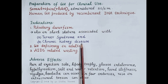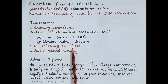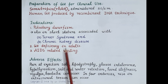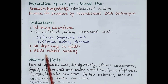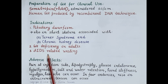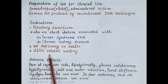Somatropin is also indicated for growth hormone deficiency in adults, which can be caused by pituitary disease, hypothalamic disease, surgery, radiation therapy, or trauma. In these patients, somatropin increases lean body mass and improves energy levels. Additionally, somatropin is indicated for the treatment of AIDS-related wasting, where it increases lean body mass, body weight, and improves physical strength and stamina.